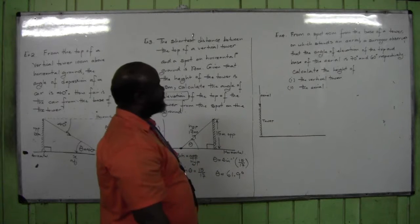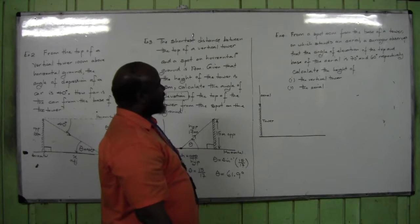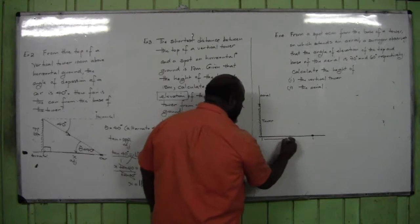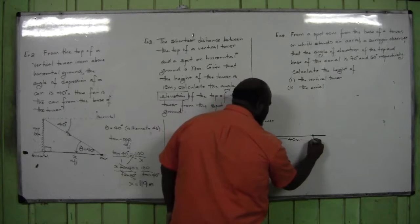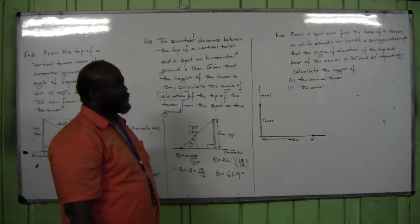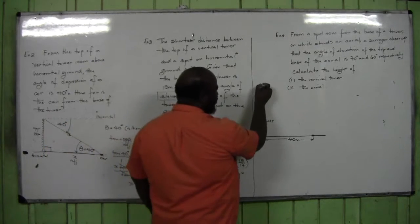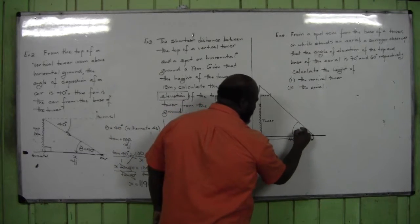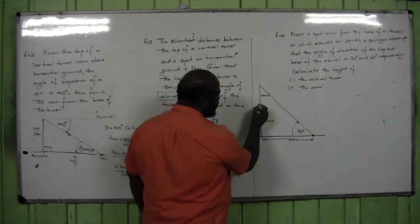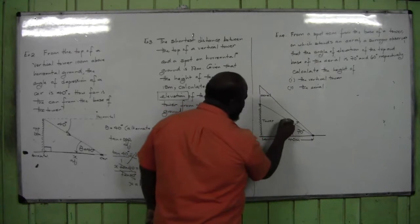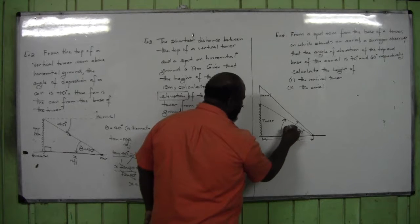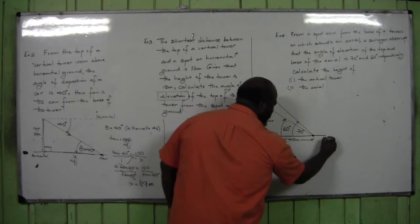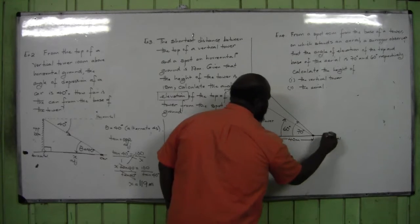The surveyor is standing 40 meters from the base of the tower. He looks up to the top of the aerial — angle of elevation 70 degrees. He looks up to the bottom of the aerial (top of the tower) — angle of elevation 60 degrees. The angle between vertical and horizontal is 90 degrees. That completes the diagram.